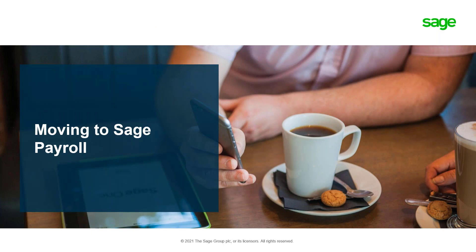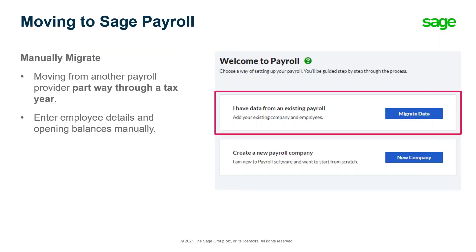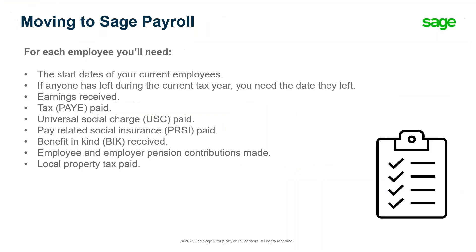Now let's look at migrating to Sage part way through the tax year. Use this option if you've already processed some of the tax year in another system and are moving to Sage Payroll mid-year. You must migrate your data at the start of a tax month or quarter — finish the pay period in your previous software, complete your online submission to Revenue Online Services, and then migrate your data to Sage Payroll at the beginning of the new tax month. When you migrate mid-year, you will need to enter opening balances for your employees.